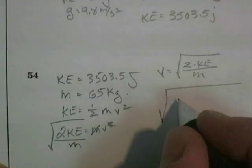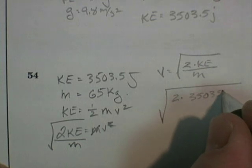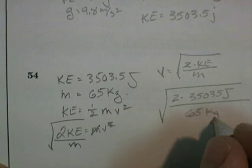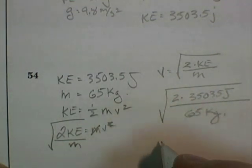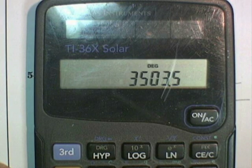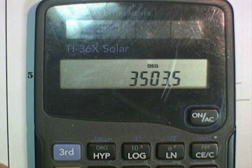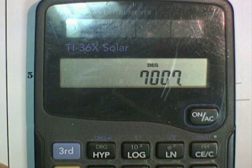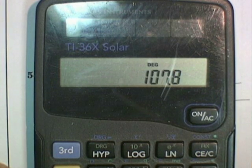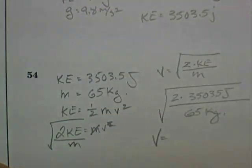So I can write velocity is equal to the square root of 2 times kinetic energy divided by mass. So that's the square root of 2 times 3,503.5 joules divided by 65 kilograms. So velocity would be equal to, get the calculator out. Now I already have my kinetic energy on my calculator from my last problem. So I multiply that by 2 divided by 65, and then I have to hit the square root button. So I've got a velocity of 10.38 meters per second.